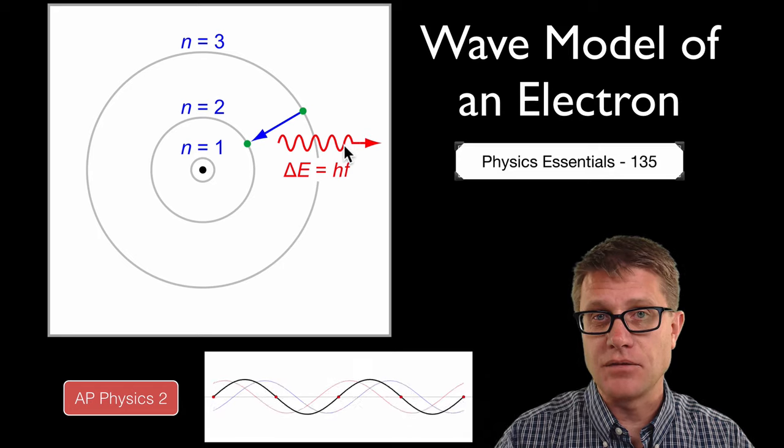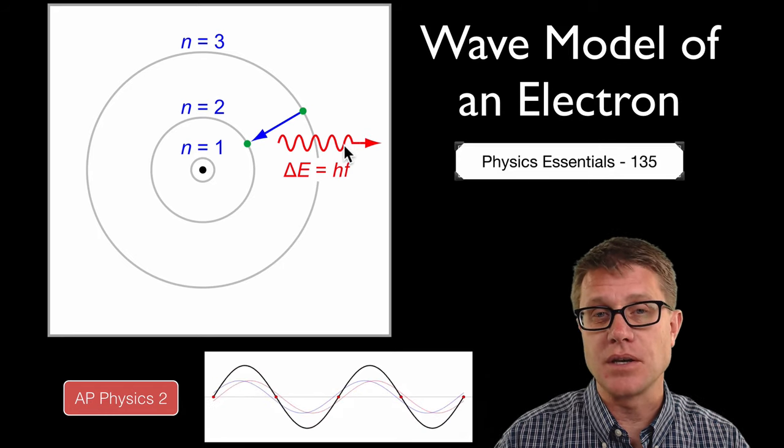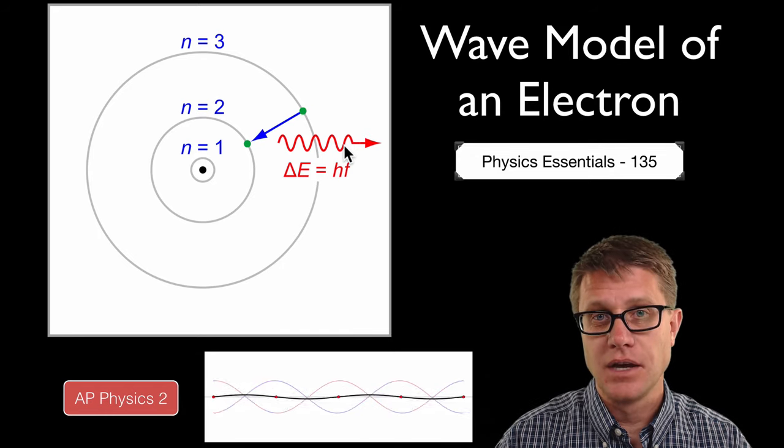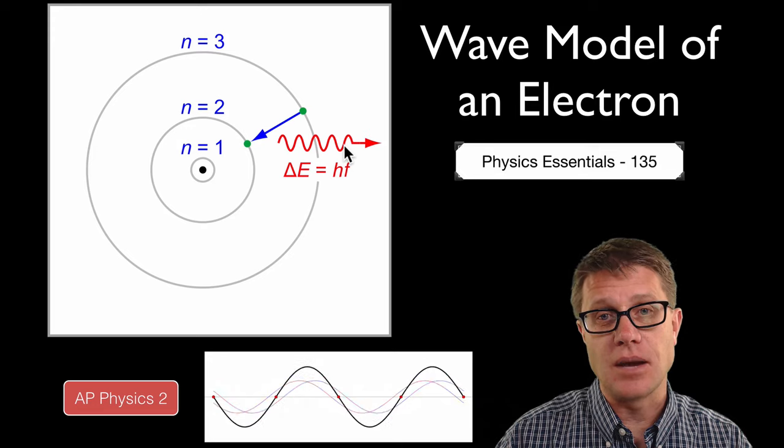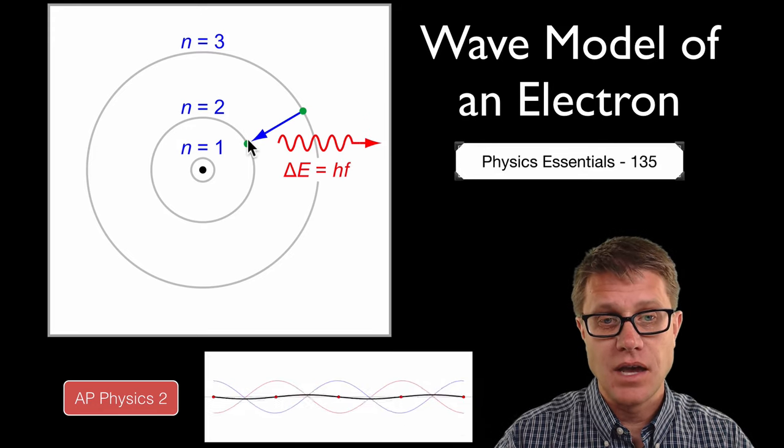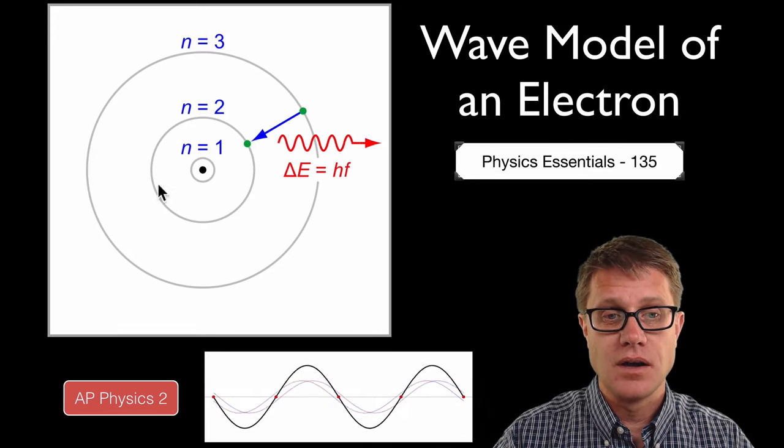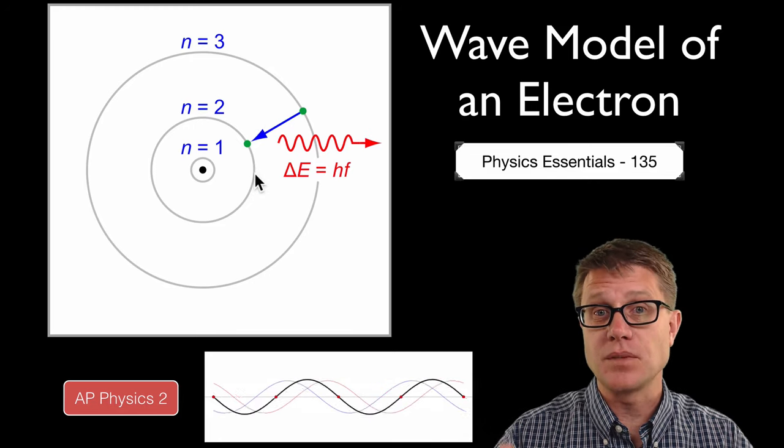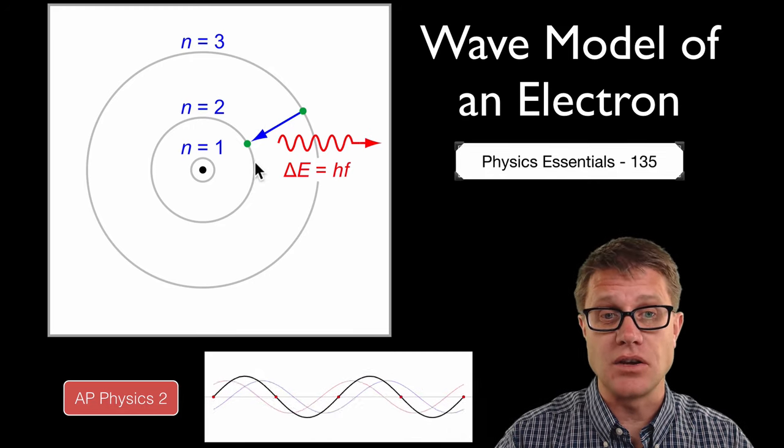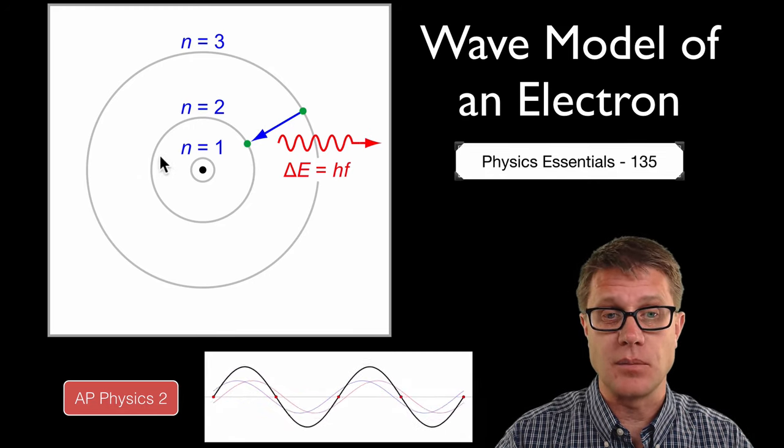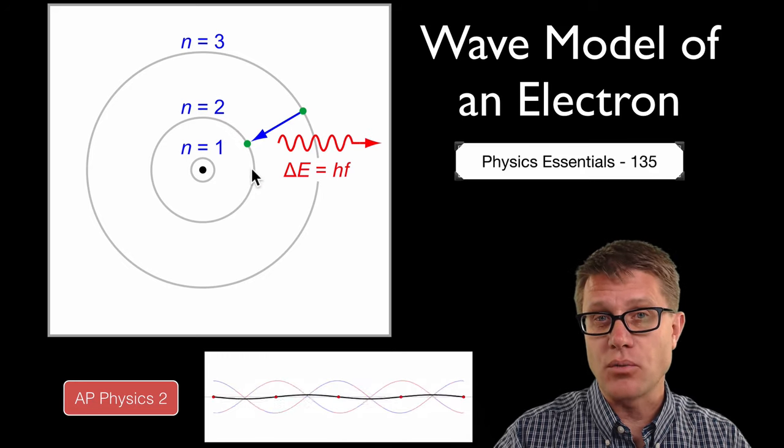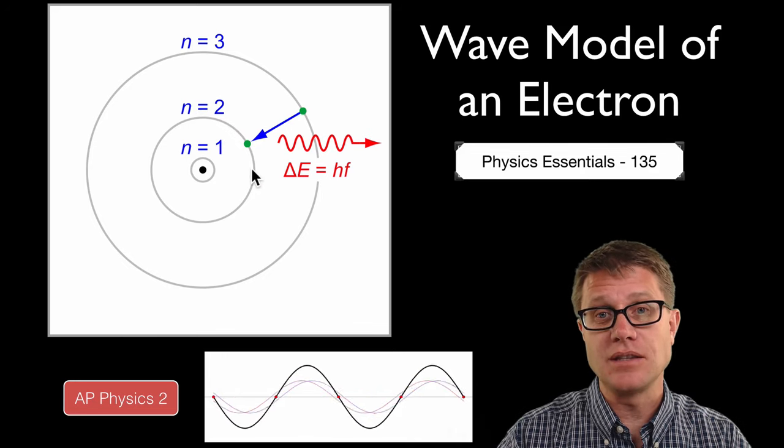So if we have waves moving back and forth they create something called a standing wave. And so what scientists started to hypothesize is maybe the electrons as they are moving around are interfering with themselves. They are going so fast that they are interfering with the electrons as they come around again. And so maybe they are wrapping around and creating standing waves.